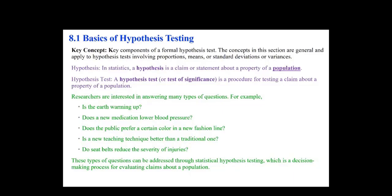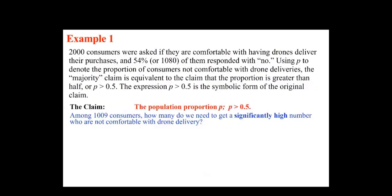Look at this example. 2,000 consumers were asked if they are comfortable with having drones deliver their purchases. 54%, or 1,080 of them, responded with no. Using P to denote the proportion of consumers not comfortable with drone deliveries, the majority claim is equivalent to the claim that the proportion is greater than half, or P is greater than 0.5. The expression P > 0.5 is the symbolic form of the original claim.